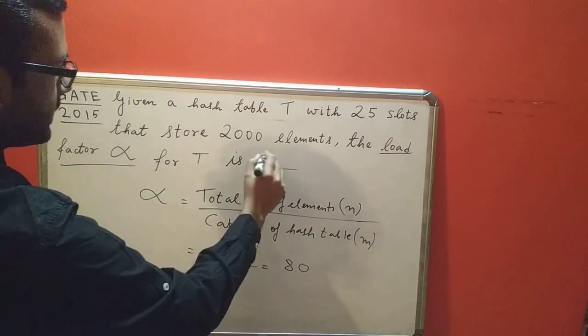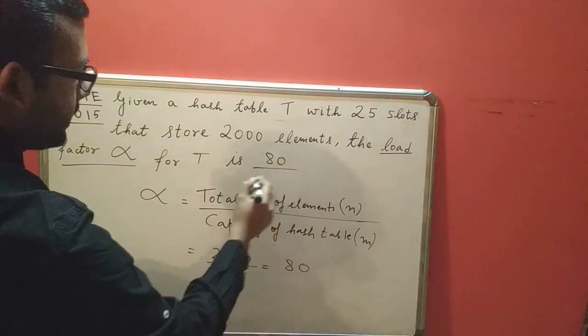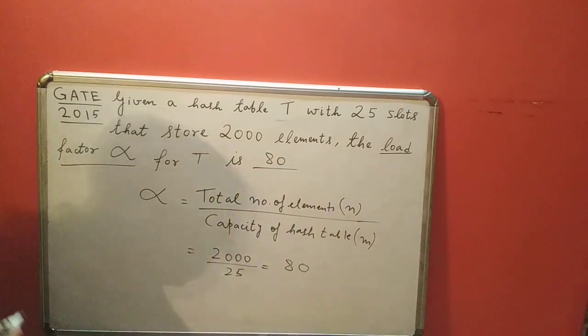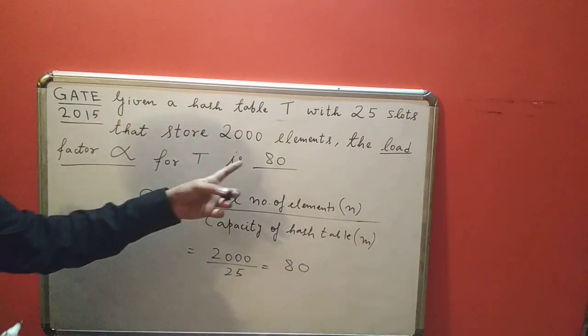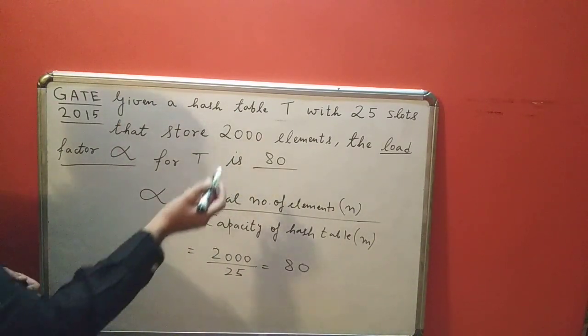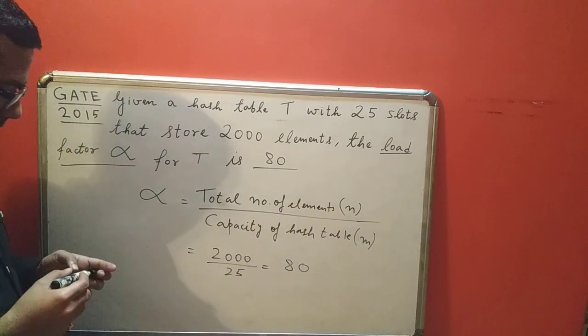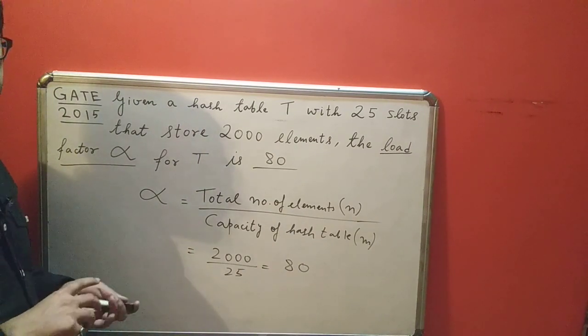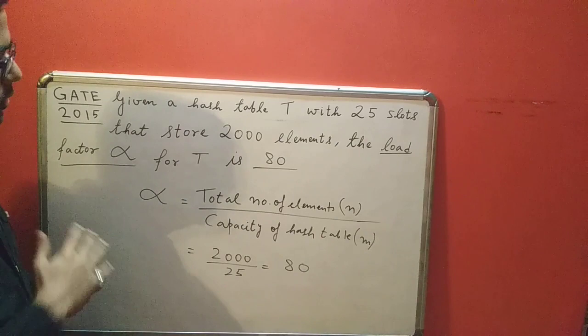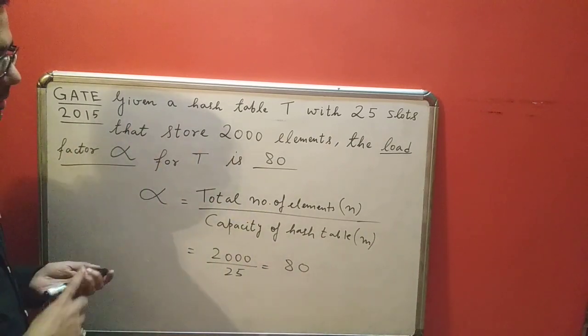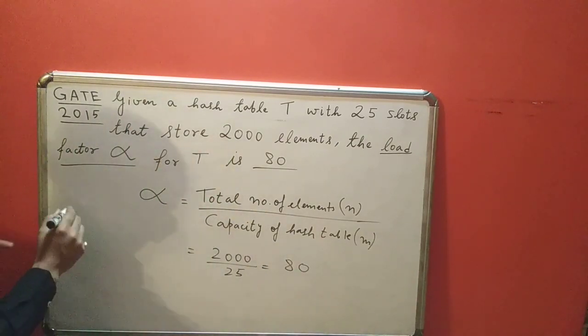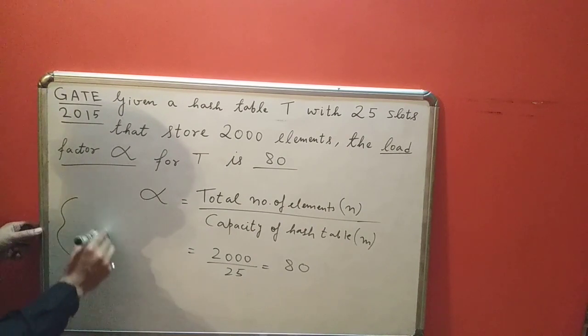But what does this load factor signify? The load factor of a hash table tells us the average distribution of elements across the hash table. That means what does the hash table actually do?